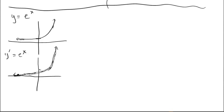You may be thinking it looks like the original graph — and it absolutely does. This is one of those unique cases where the natural exponential function is its own derivative. When we get to our calculus work, we won't just find derivatives of the natural exponential alone — that would be too easy. We'll be looking at composite natural exponential functions, which connects to the chain rule.